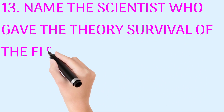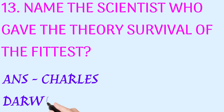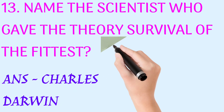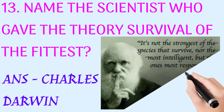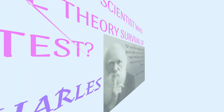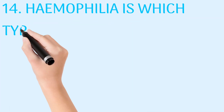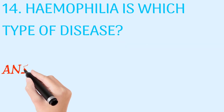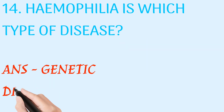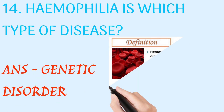Name the scientist who gave the theory of survival of the fittest. Answer: Charles Darwin. Which type of disease is it? Answer: genetic disorder.